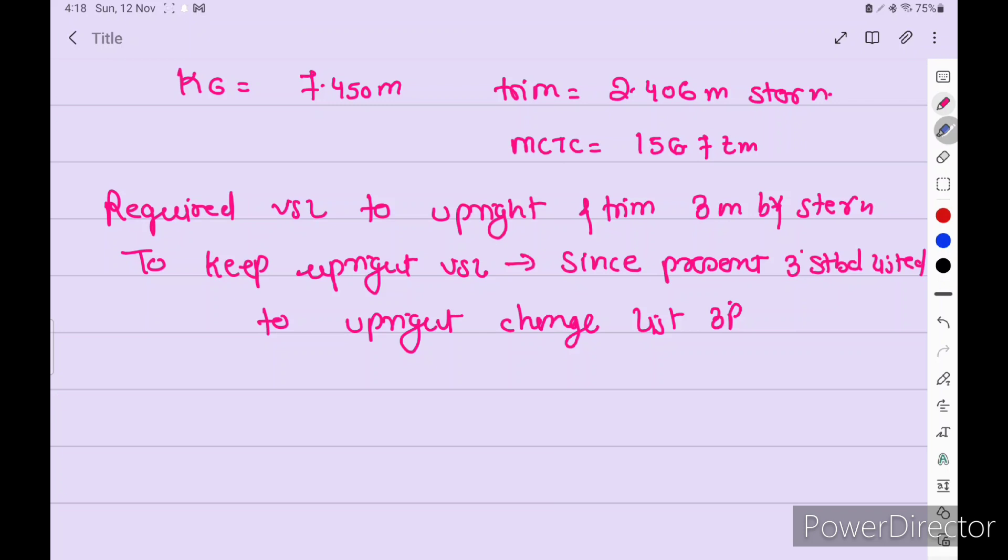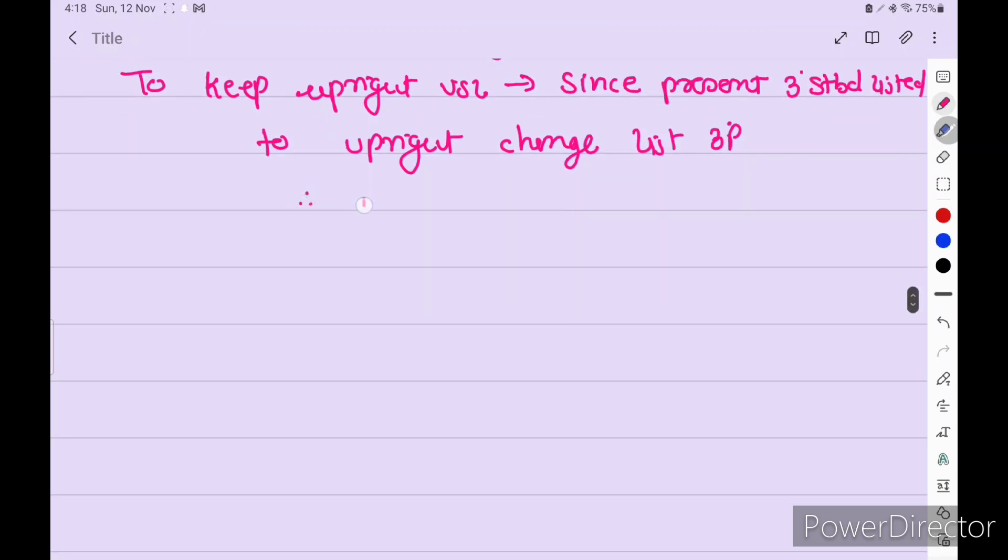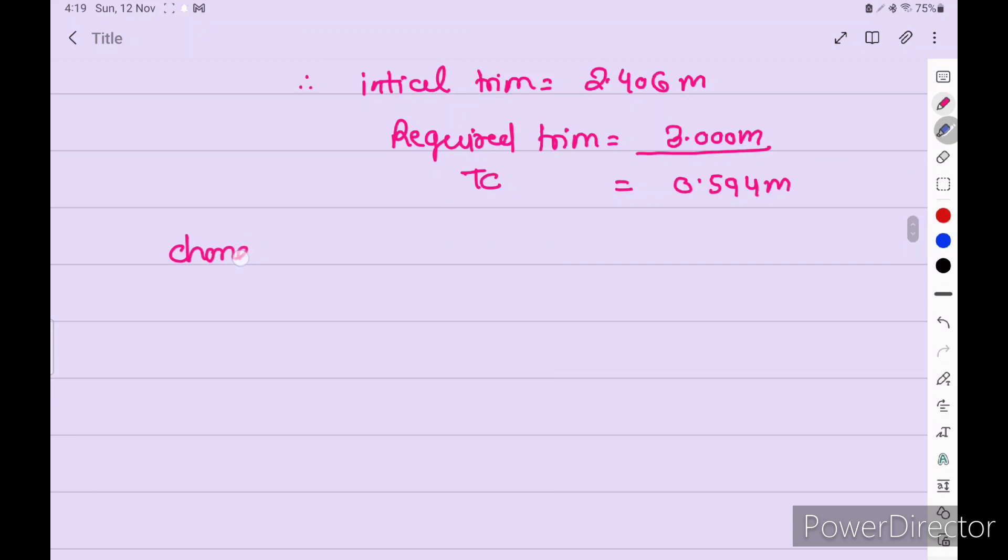For trim, initial trim 2.406 meter by stern, required trim 3 meter, so trim change is 0.594 meter. Formula is change of trim equals trimming moment upon MCTC into 100.